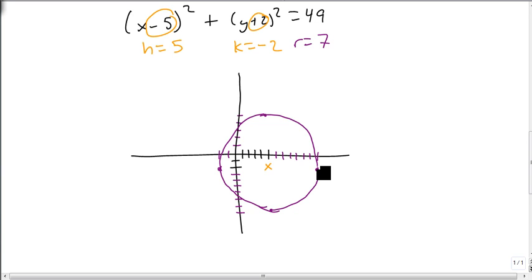And there's our really ugly circle. But the important part is that we get our center point at 5, negative 2, and that we then just add 7 in each of the directions. So this becomes 12, negative 2. This is 5, 5. This is negative 2, negative 2. And this is 5, negative 9.